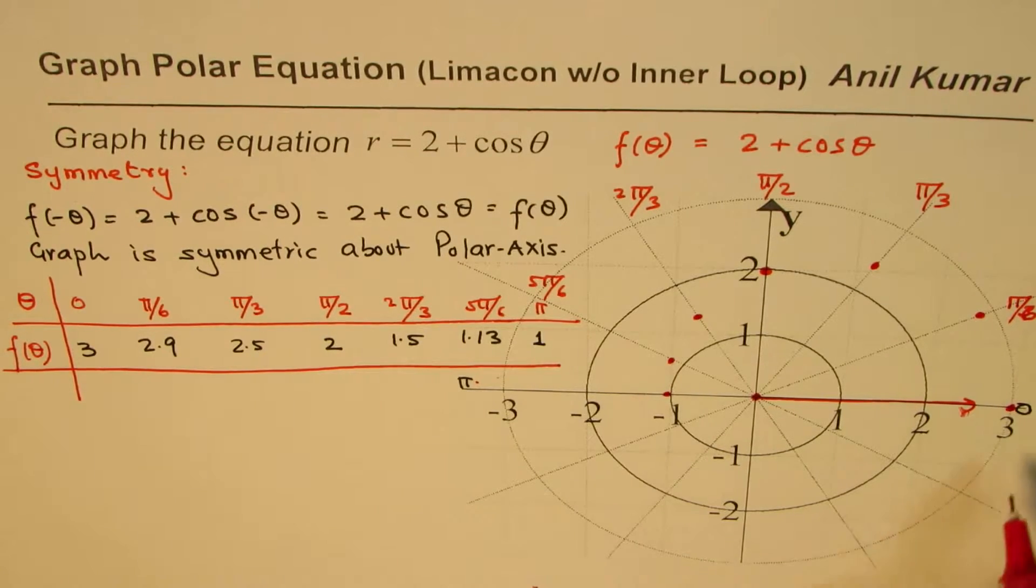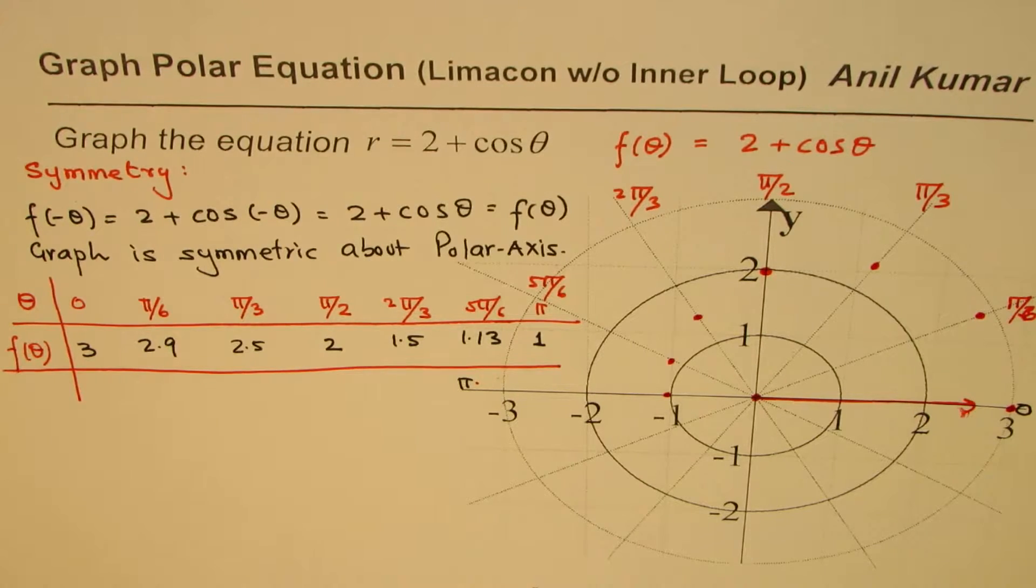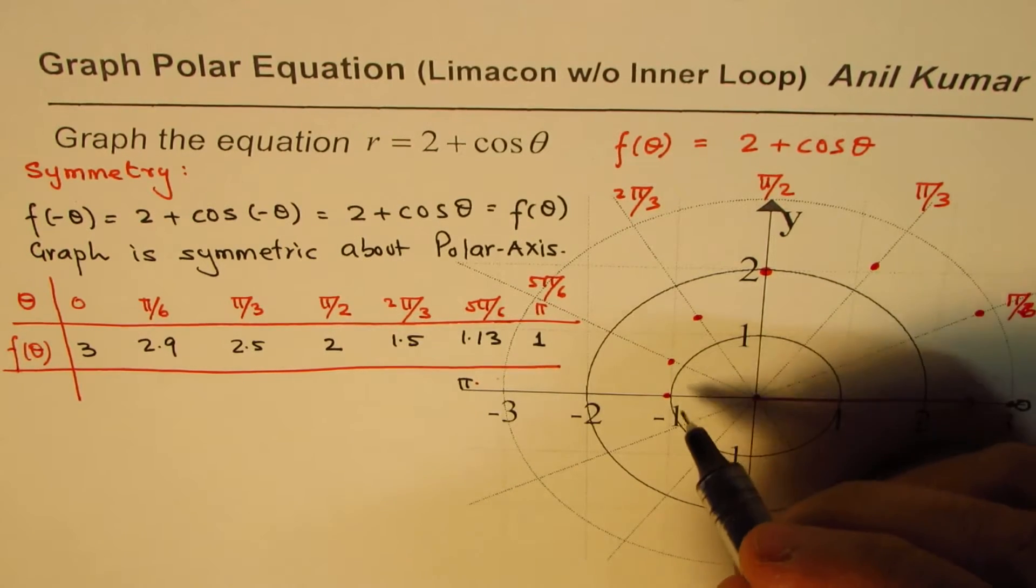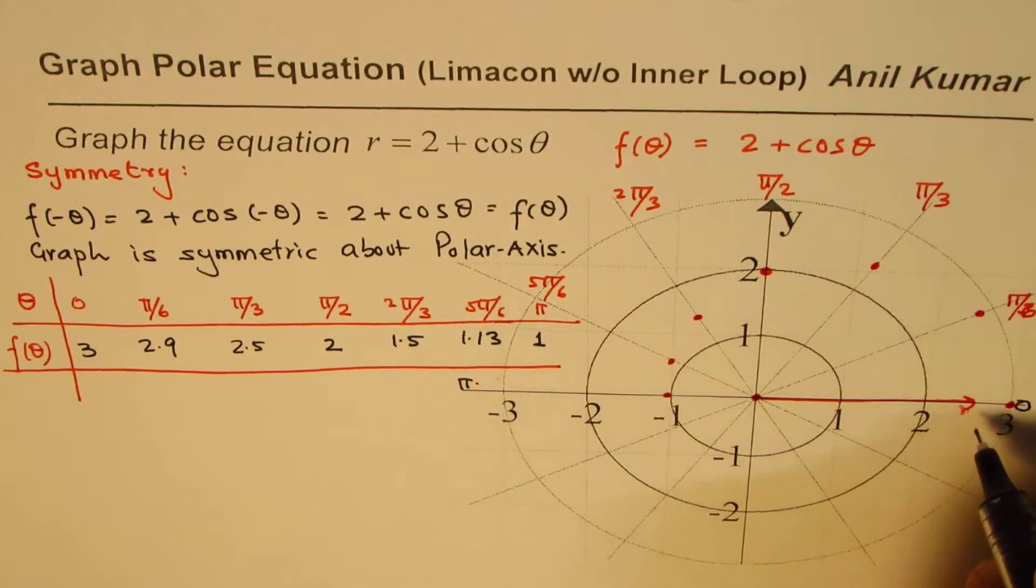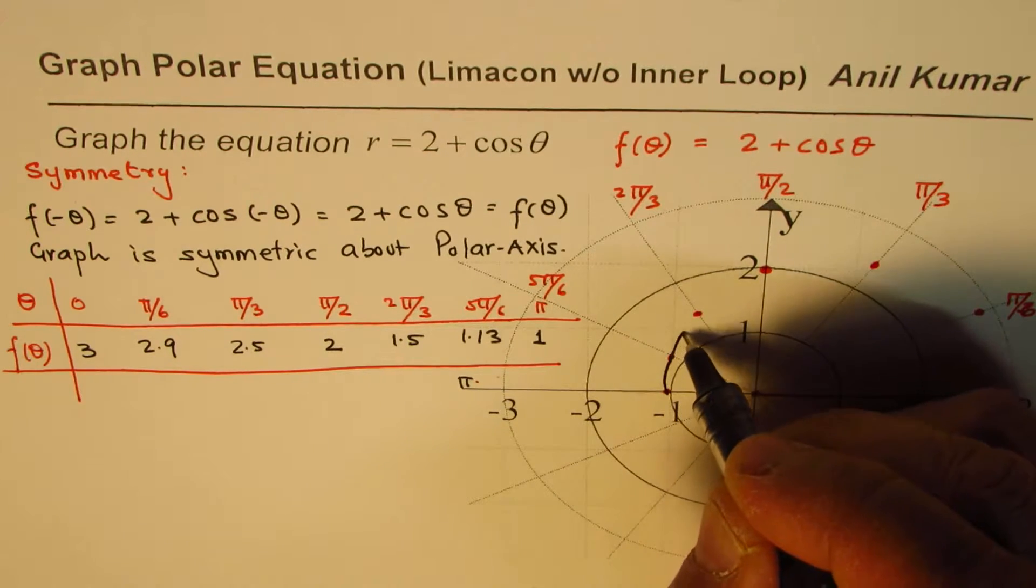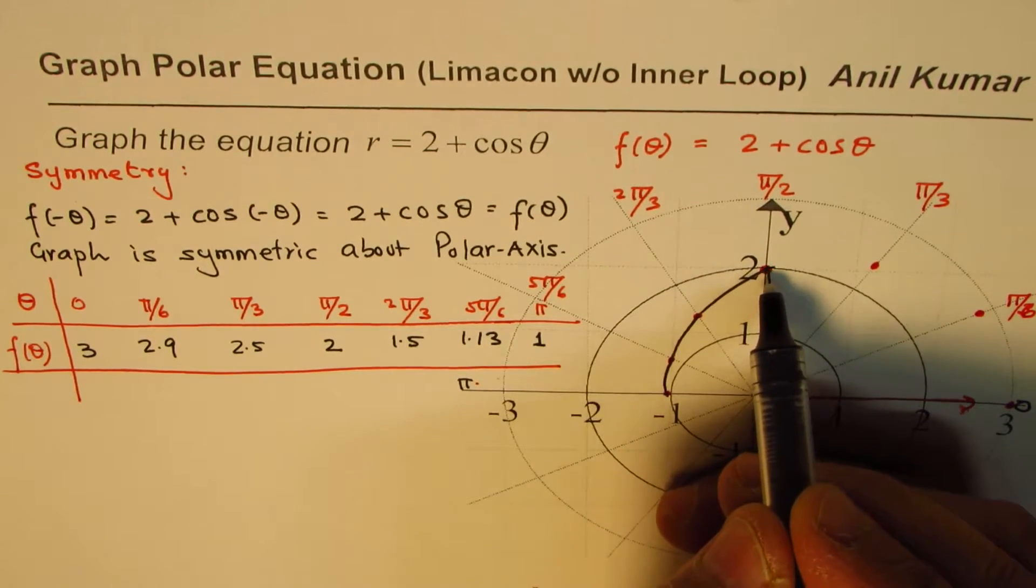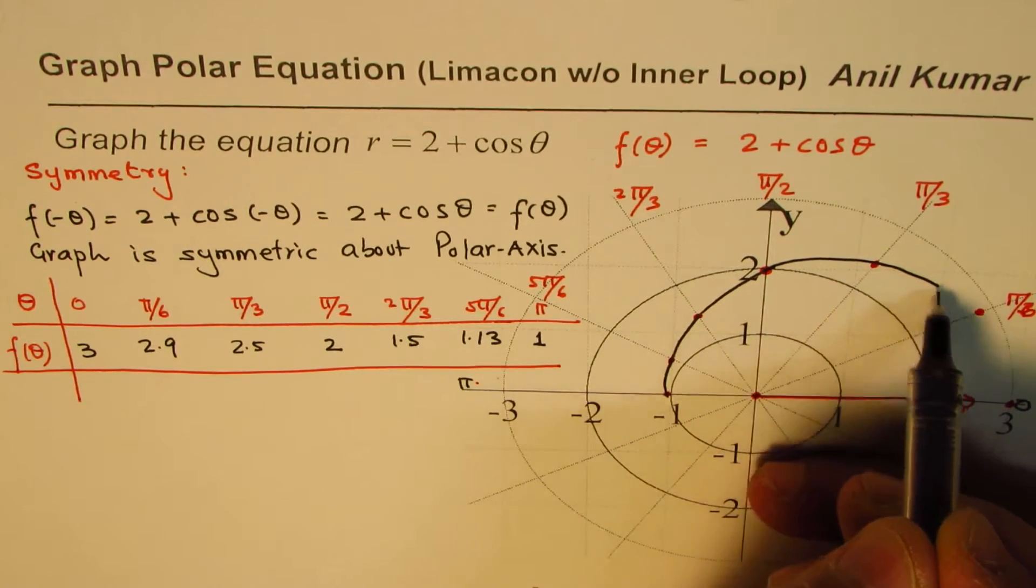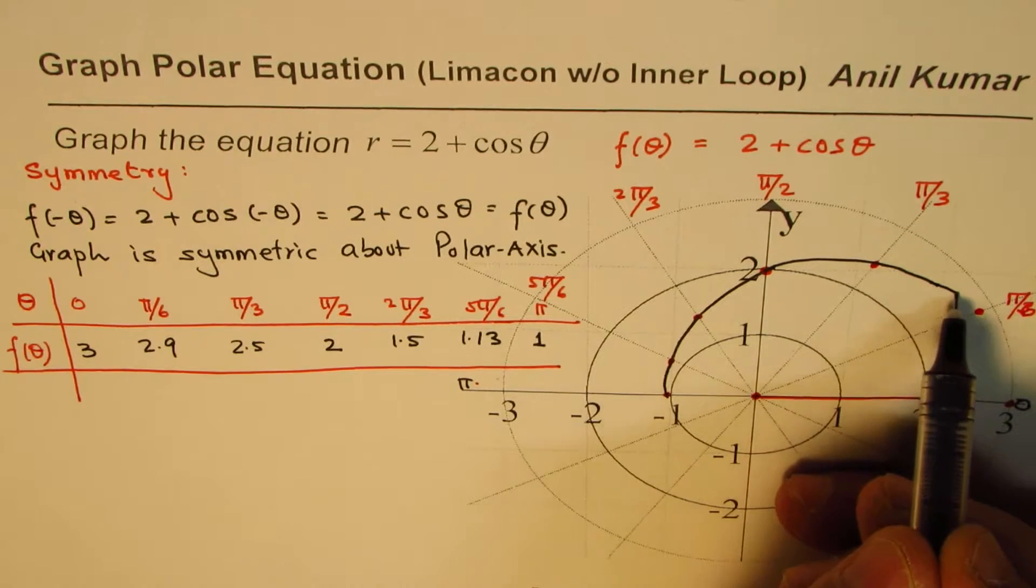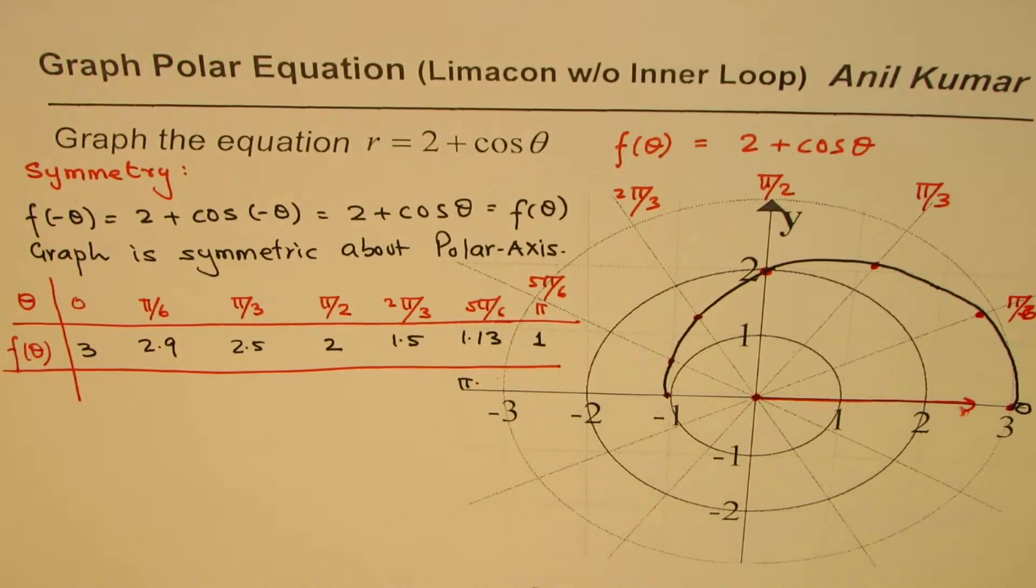So these are the points which we get. So it's kind of a graph which is like this. So we can join this with a curve. So let me just join them with a curve. Kind of like this. So that's the graph we get.